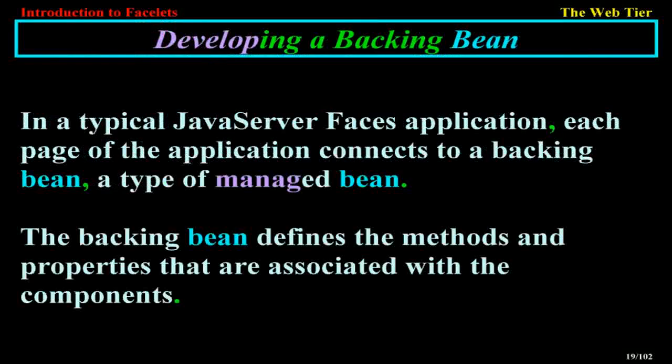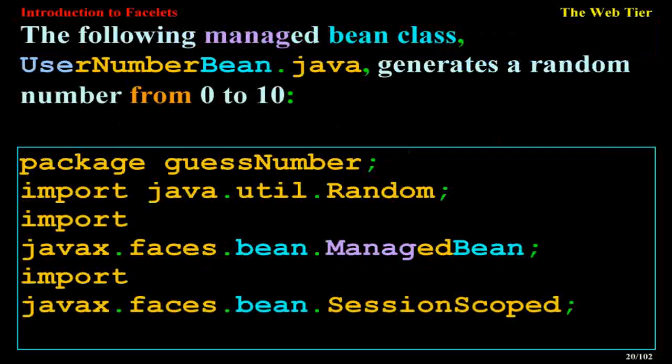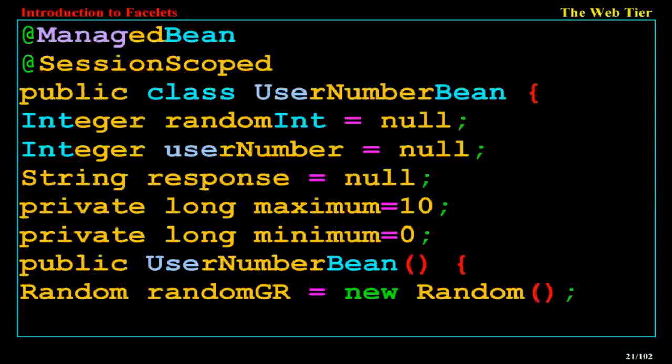In a typical JavaServer Faces application, each page connects to a backing bean, a type of managed bean. The backing bean defines the methods and properties associated with the components. The following managed bean class, UserNumberBean.java, generates a random number from 0 to 10. The class is in the package guessNumber, imports java.util.Random and javax.faces.bean.ManagedBean, and is annotated with @ManagedBean and @SessionScoped.